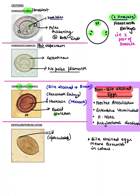Next is Diphyllobothrium latum. In cestodes, there are two orders, and in the Pseudophyllidea order you have Diphyllobothrium latum and Spirometra. These are different because they have operculated eggs. Similarly, all trematodes also have operculated eggs except the Schistosoma family. You can see the operculated egg in the image.